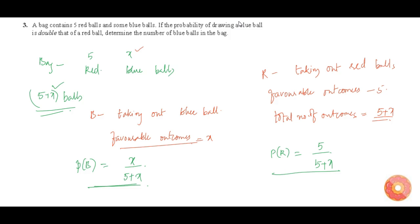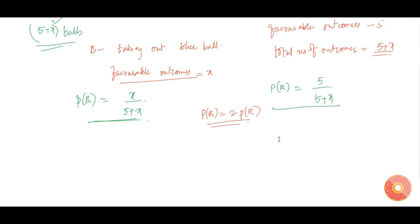Now let us apply the condition: if the probability of drawing a blue ball is double that of a red ball, determine the number of blue balls in the bag. So P(B) equals 2 times P(R). Using this condition, we need to find x, which is the number of blue balls.